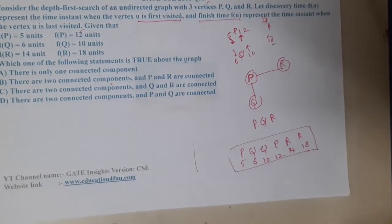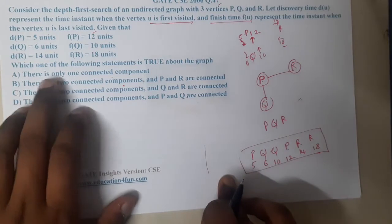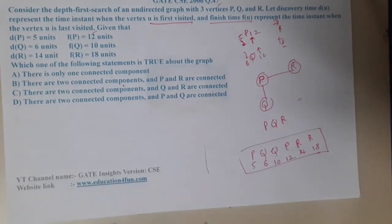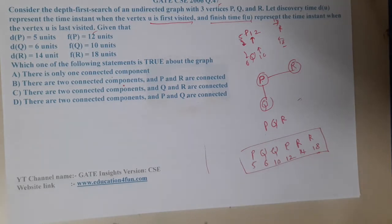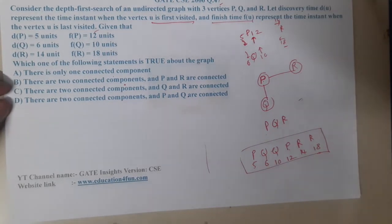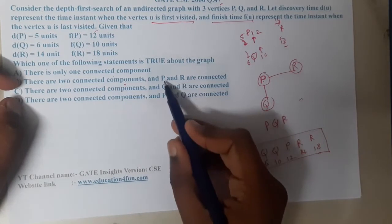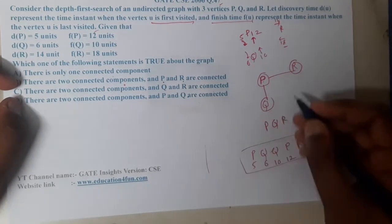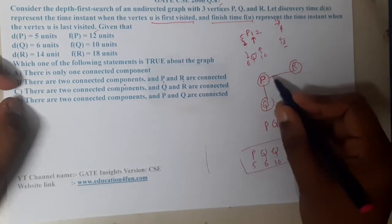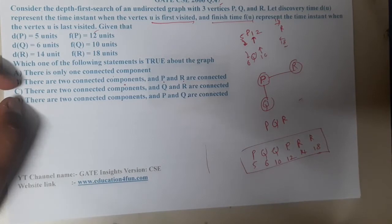Now they are asking the question with respect to this graph. It is saying that there is only one connected component, and for me also it looks like that only. But let us check the options. There are two connected components, and one is P and R are connected. So P and R connected. There is a line in between them, but I think that's not absolutely correct.